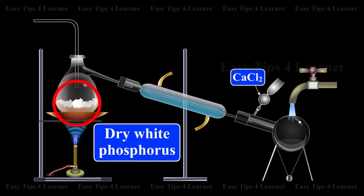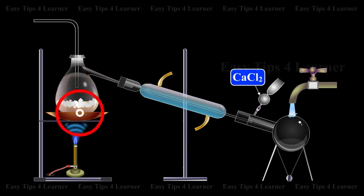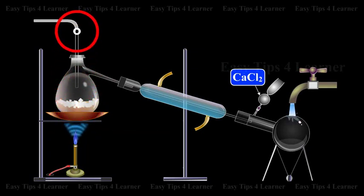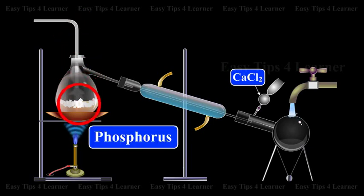Dry white phosphorus is placed in the retort and gently heated on a water bath. A current of pure dry chlorine is led over the phosphorus.